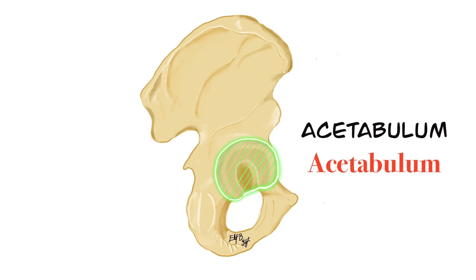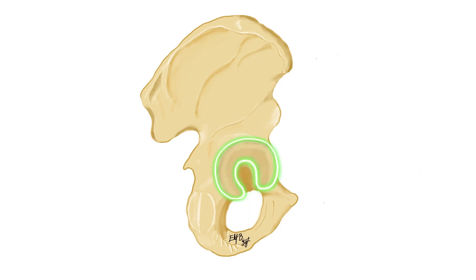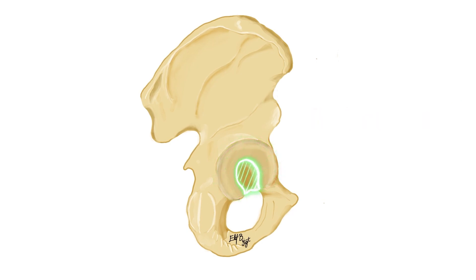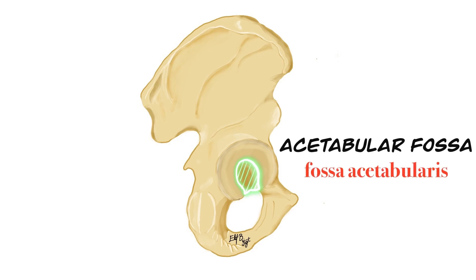Acetabulum means vinegar cup in Latin. It faces outward and forward. Inside the acetabulum, there is a half-moon shaped part that articulates with the femoral head, called the lunate surface or facies lunata in Latin. Facies means surface, and luna means crescent or moon. The part of the acetabulum surrounded by the lunate surface is called the acetabular fossa, or fossa acetabularis in Latin.